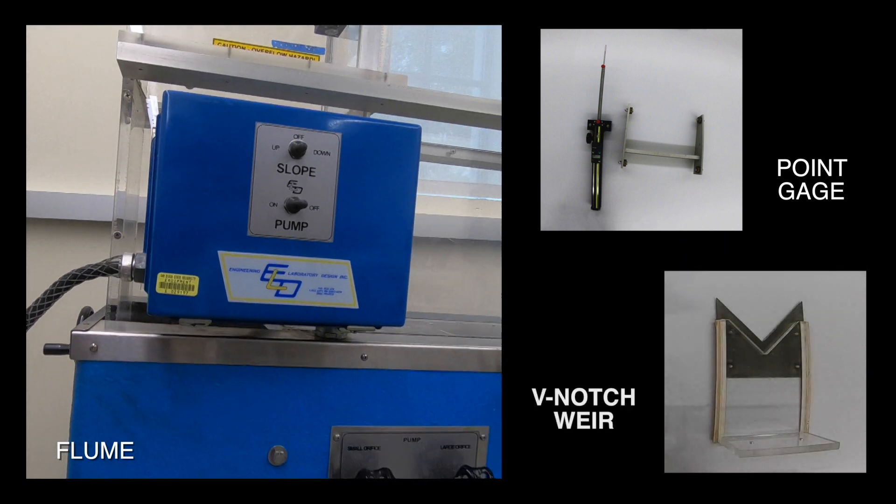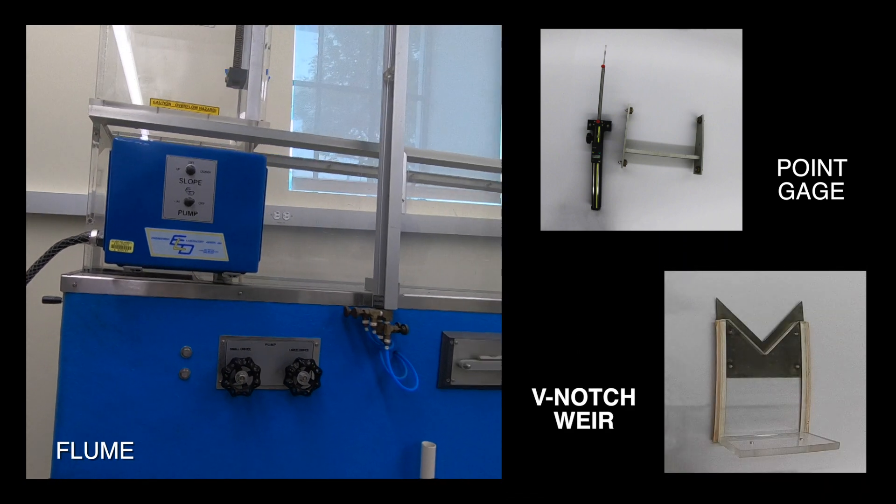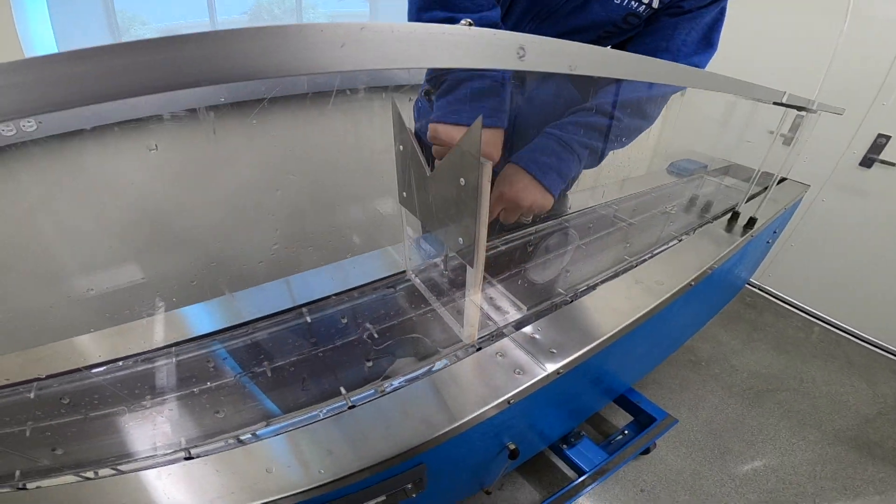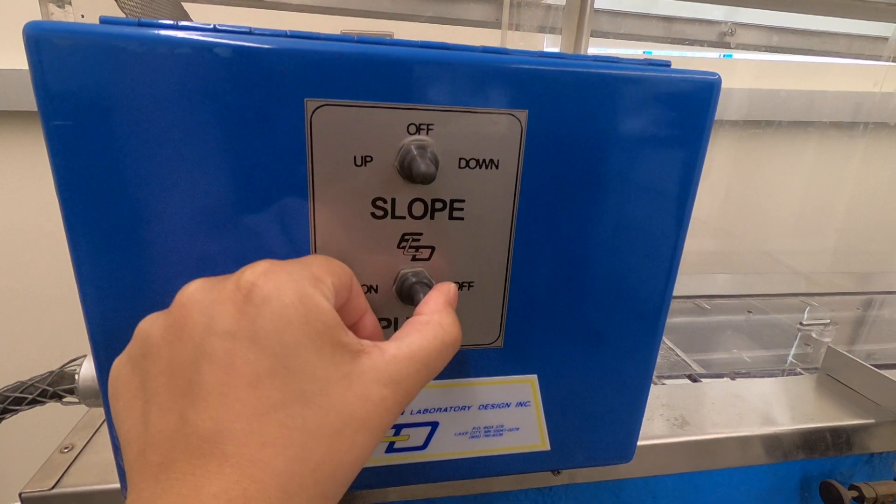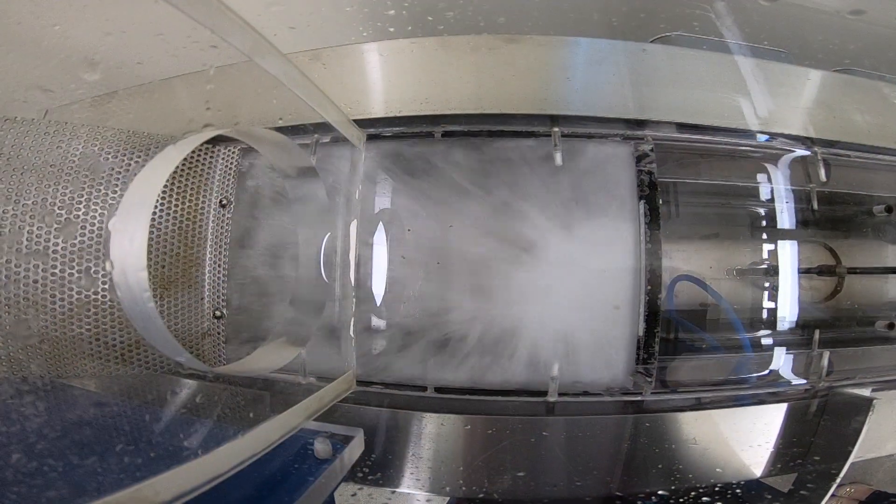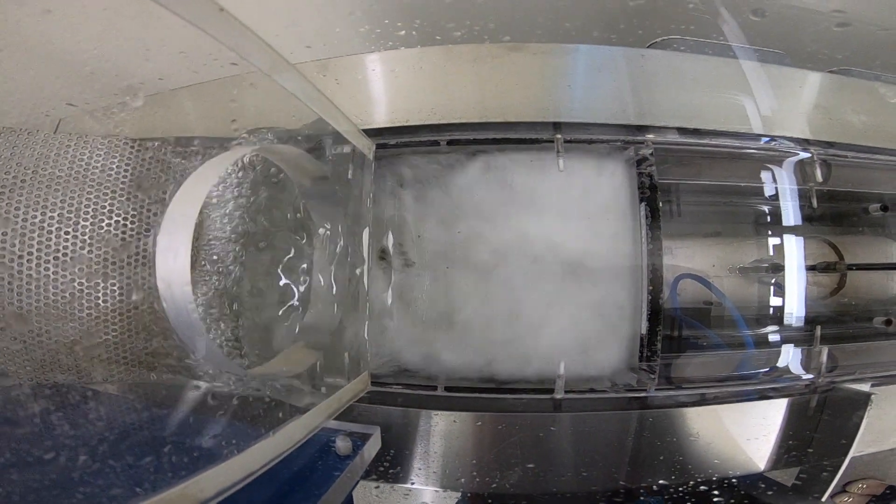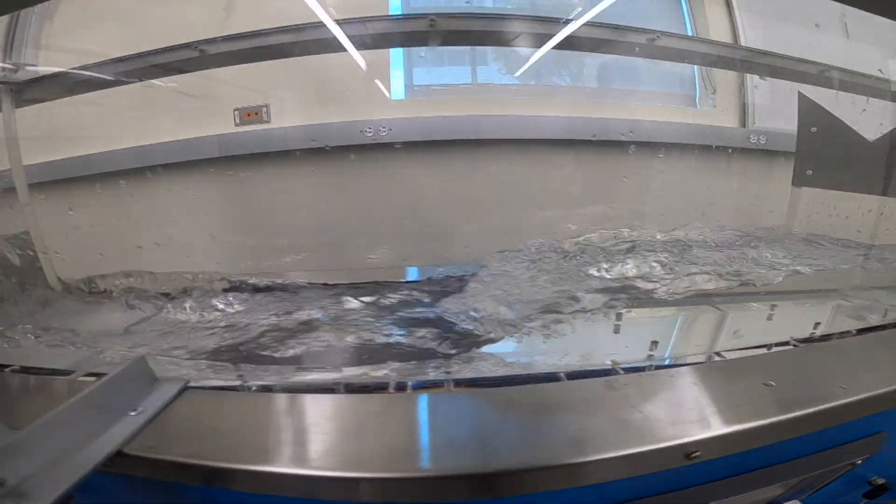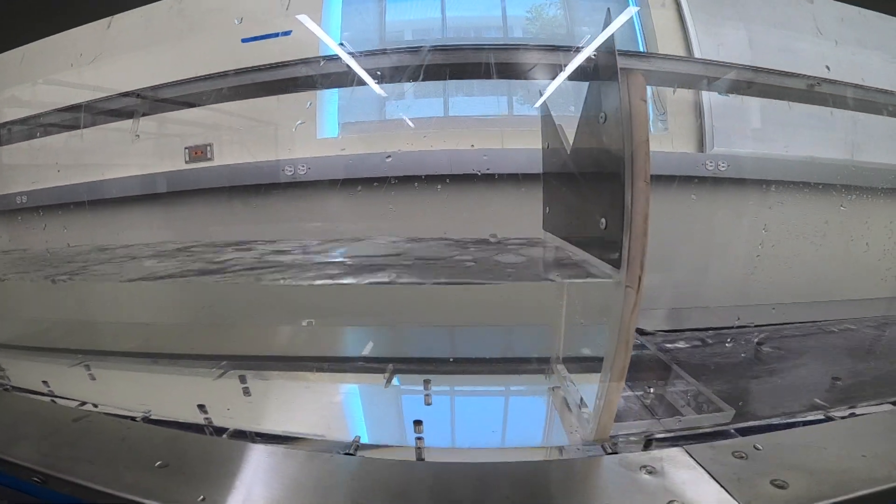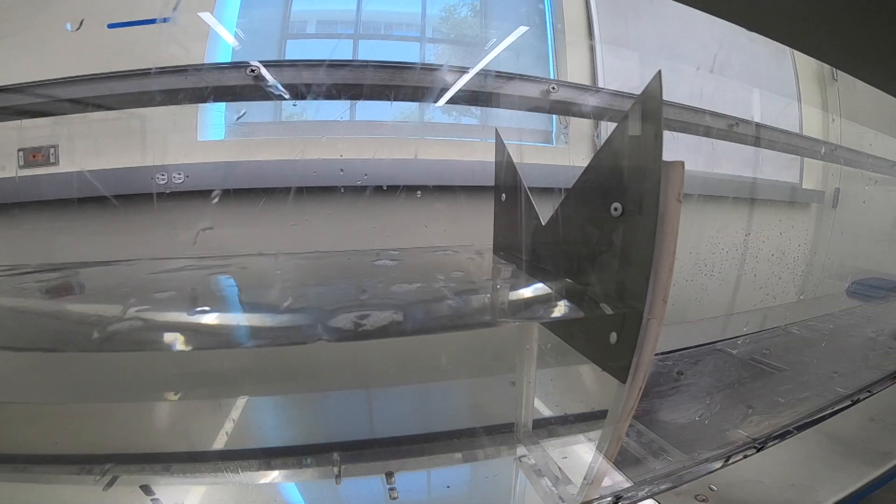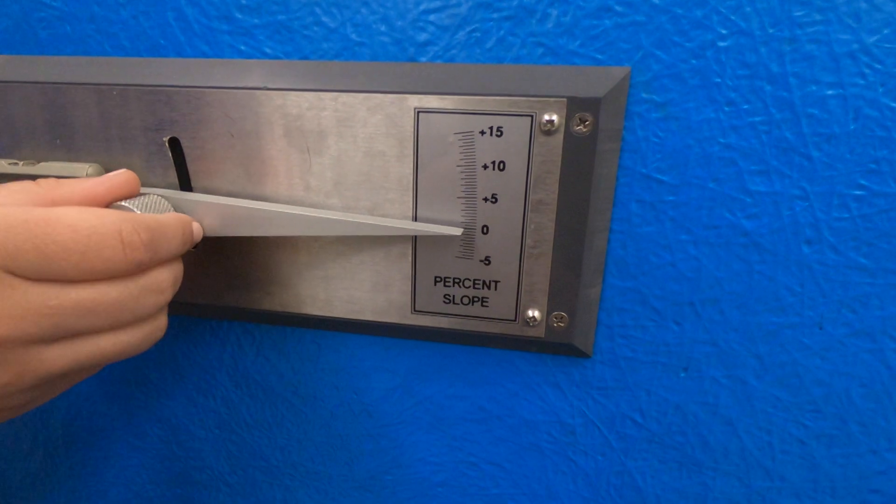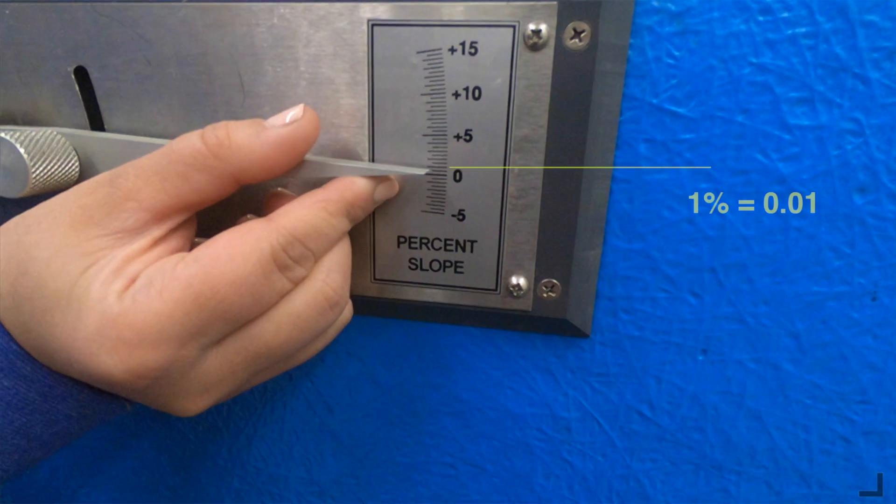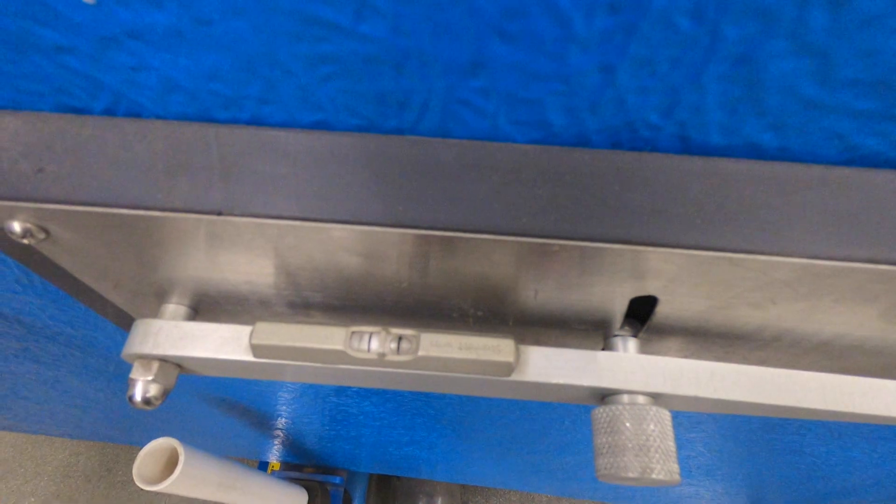Today we're going to demonstrate the V-notch weir. We turn on the pump. We set the bed slope equal to 1% and check the level.